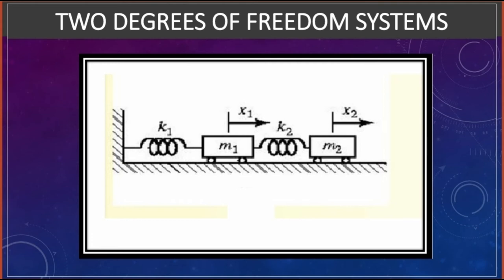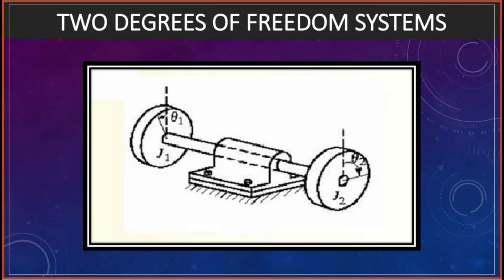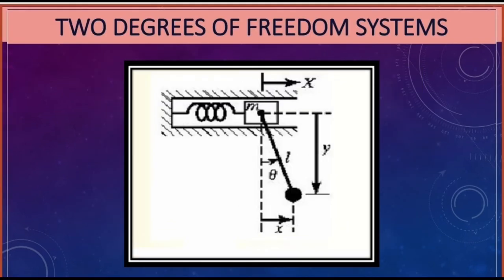Another example of two degrees of freedom: two rotors attached to a shaft each have one independent rotatory motion, making it a two degree of freedom system. Also, a system where mass M has translatory motion and length L has rotatory motion gives two independent relative motions — therefore that system is also an example of two degrees of freedom.